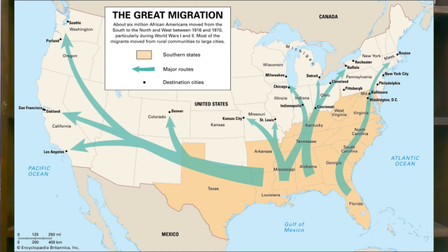One large group of migrants were Southern Blacks. The mass migration of Southern Blacks would later be known as the Great Migration, as thousands of African Americans migrated to cities such as New York, Detroit, and Chicago from the declining agricultural South, particularly during the manufacturing-heavy First and Second World Wars.